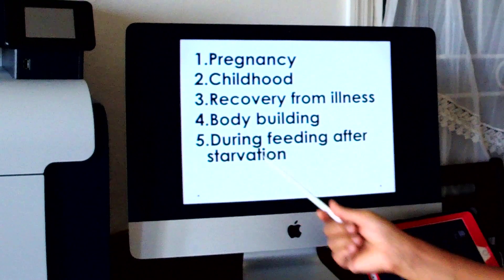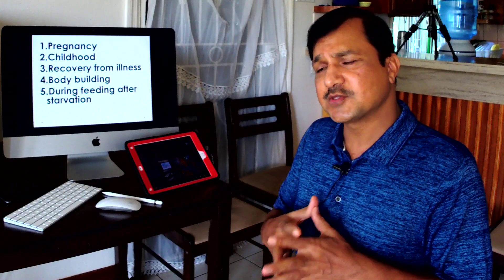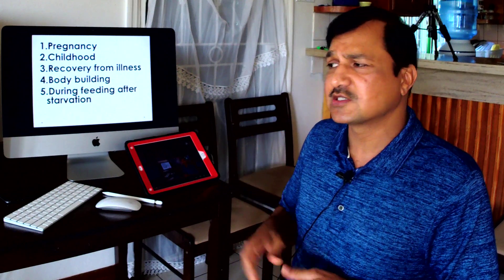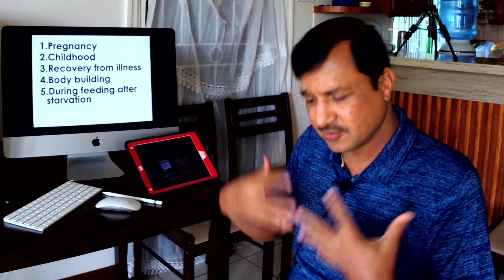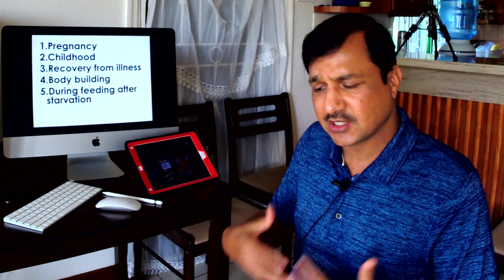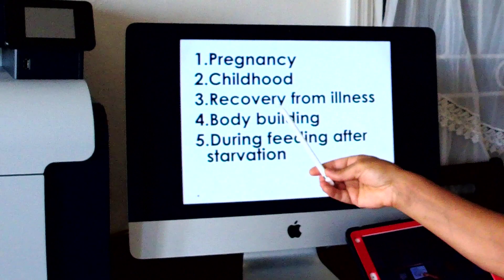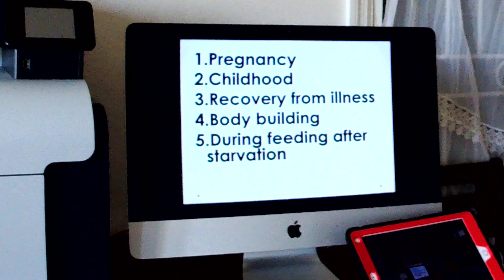During feeding after starvation — when a person goes into starvation, there is breakdown of skeletal muscle, and proteins are used for gluconeogenesis. During feeding after starvation, that recovery is going on: the muscle proteins that were previously degraded are all recovering, and replenishment is happening — that is another example of positive nitrogen balance. To recap, the examples for positive nitrogen balance are: pregnancy, childhood, recovery from illness, body building, and feeding after starvation.